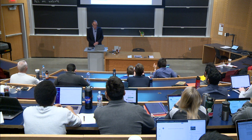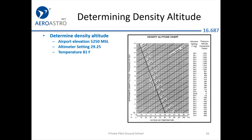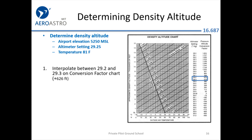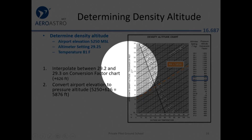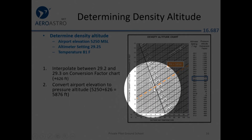Here's a density altitude chart — this is the kind of stuff on the written exam. You look to find where the pressure altitude is on the chart and they say to add 626 feet, interpolating between two values. Then you've got the pressure altitude line going from here down at about 5,856 feet, and now you have to correct for temperature.